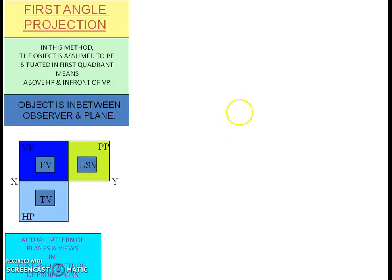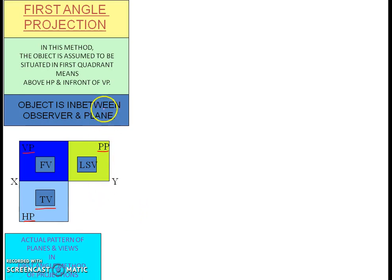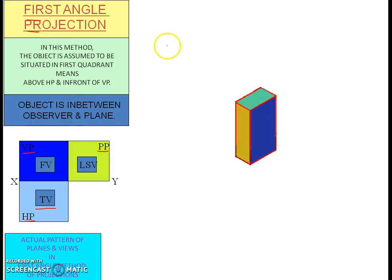This is the previous thing that you all know. In the VP we are getting the front view and the side view, and the top view in the HP. We are using only the first angle projection because we are following ISO standards.